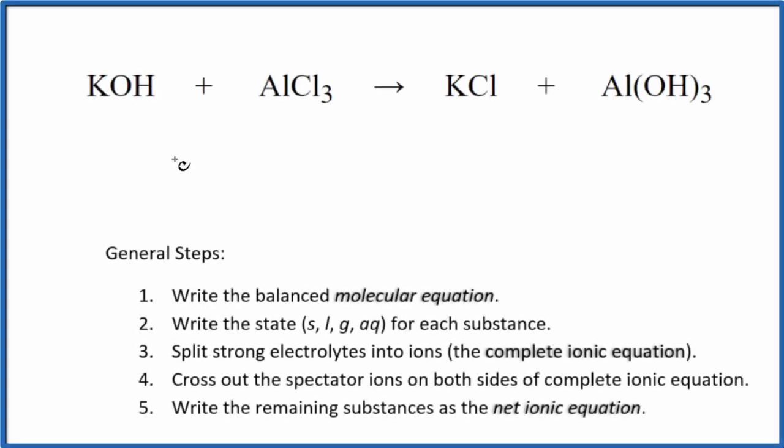In this video, we'll write the balanced net ionic equation for KOH plus AlCl3. This is potassium hydroxide plus aluminum chloride. First thing we need to do is balance the molecular equation.